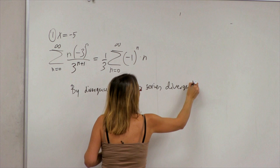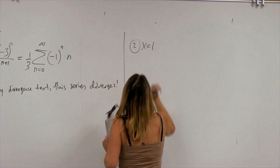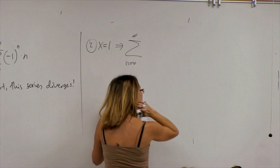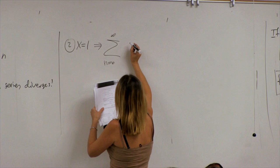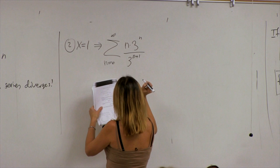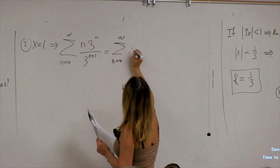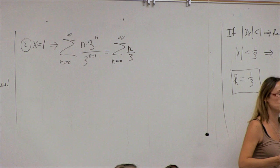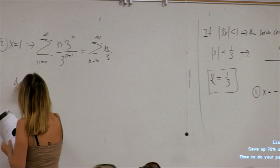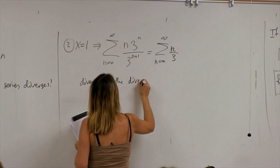The second endpoint is x equals 1. We have Σ n · 3^n / 3^(n+1) = Σ n/3. Again, each term grows with n — they don't go to 0. Again, diverges by the divergence test.